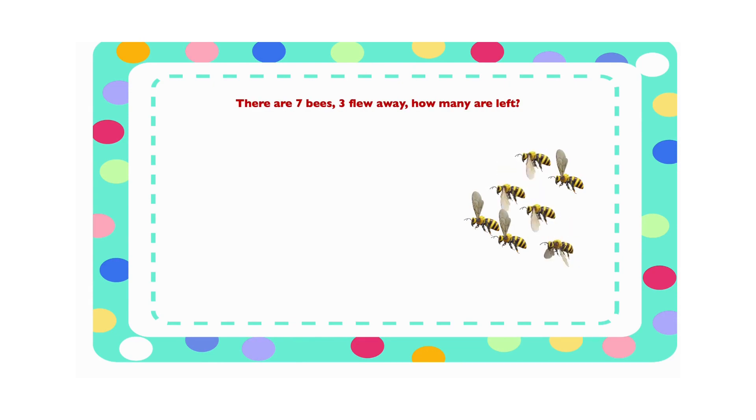There are 7 bees. 3 flew away. How many are left? Now let's count the remaining, and find out how many are left. 1, 2, 3, 4. 4 bees left. So 7 minus 3 will give us 4.